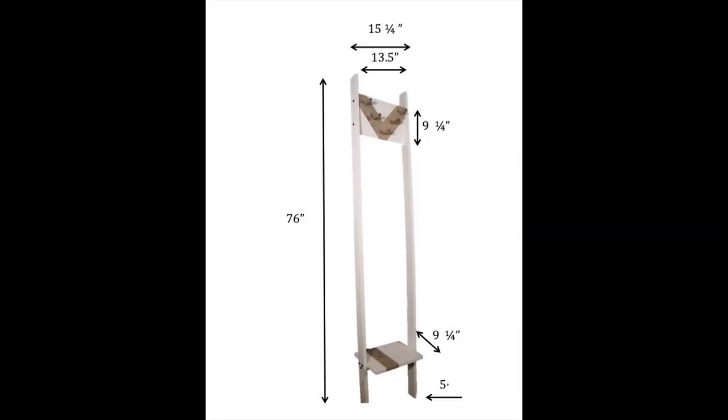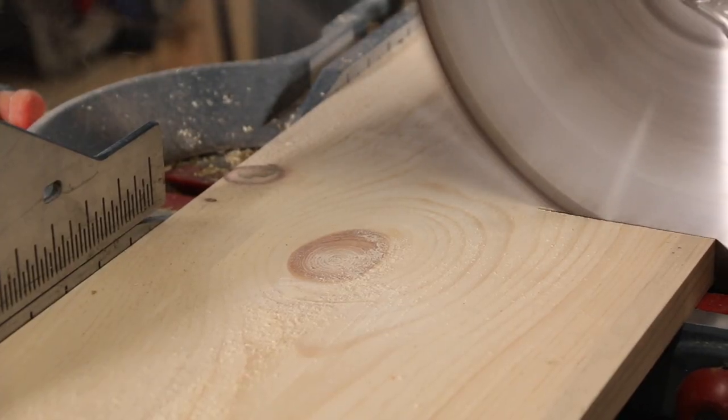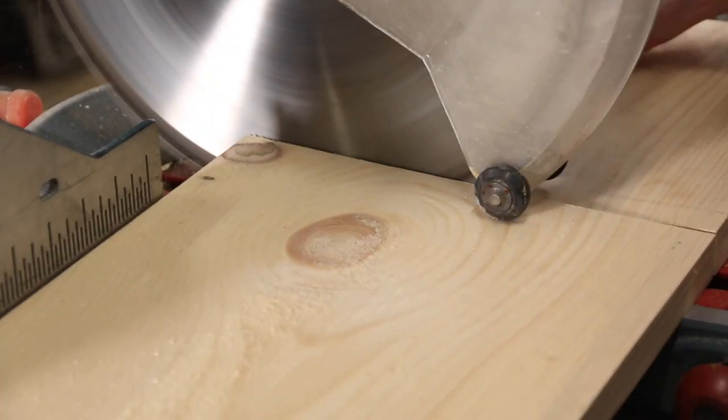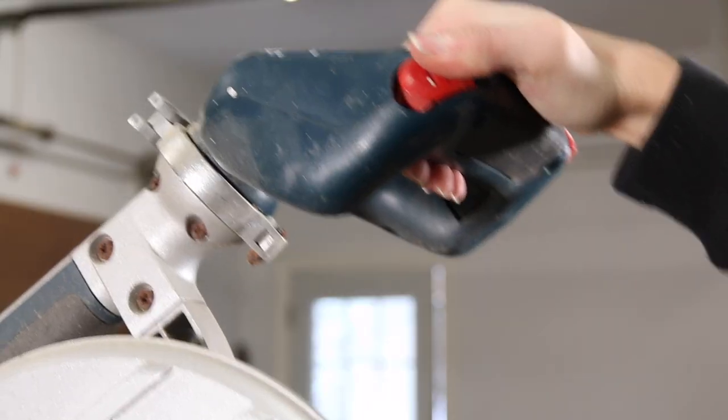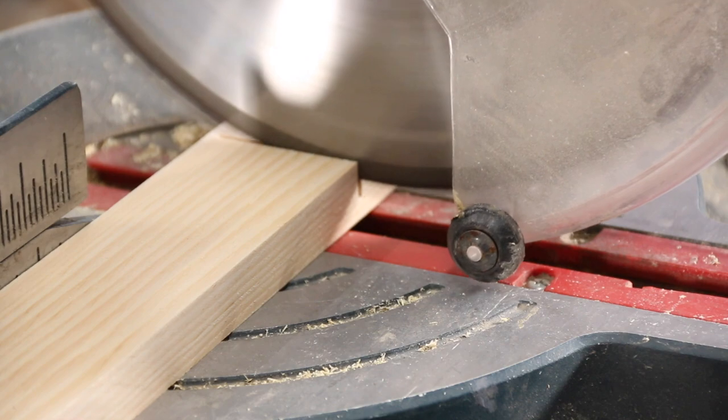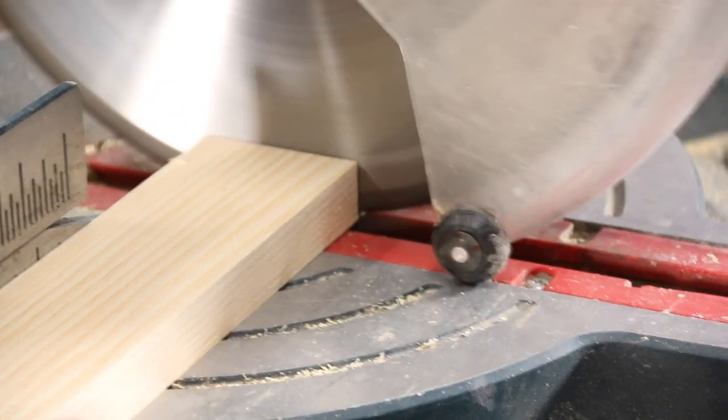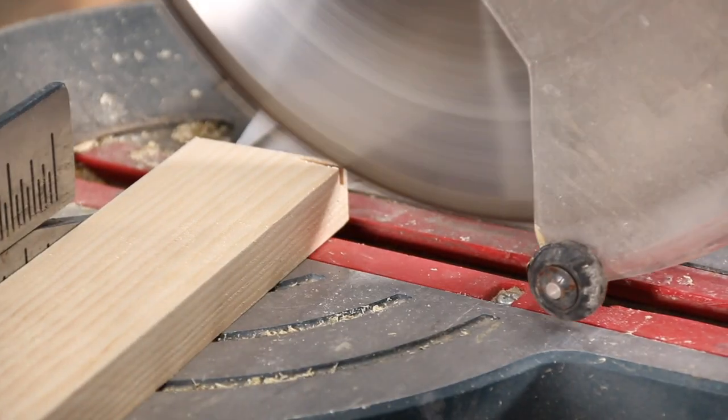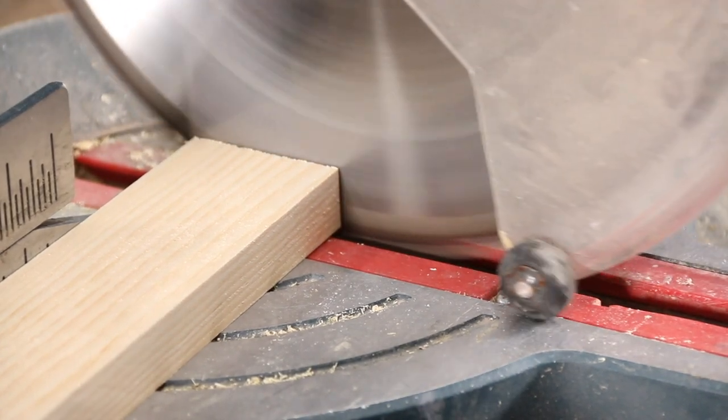The first thing I did was cut all of the pieces I needed. I cut everything out of one 10' 1x10. The width of your horizontal pieces will vary depending on the space you have. Mine were 13.5 inches, but I had a fairly narrow space, so you could probably add about 6 inches to that. I cut my legs 3.5 inches wide and 76 inches tall, and cut to 5 degrees on one end so the feet will sit flat on the floor.